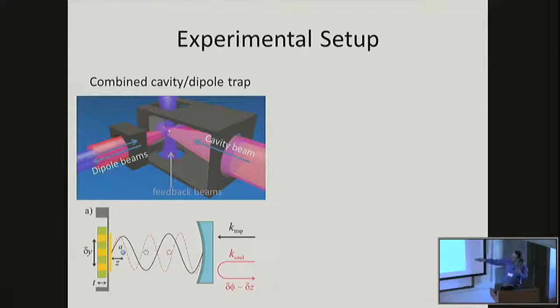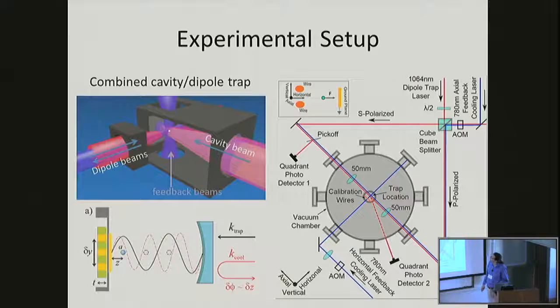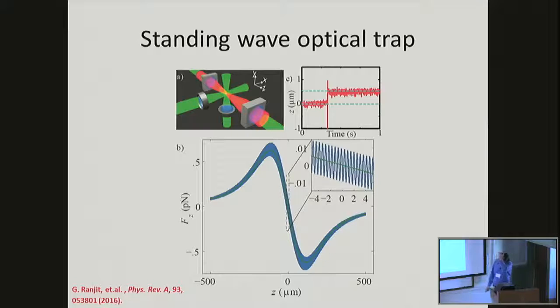Here's the experimental setup. We have a few sets of lasers in the experiment. Here's the experiment where we have the optical cavity axis here along this direction. We have an additional optical dipole trap that we use to initially trap the particle in vacuum. Then we have a set of three feedback laser cooling beams which we use to optically cool the motion of the particle. This is the schematic of the overall setup.